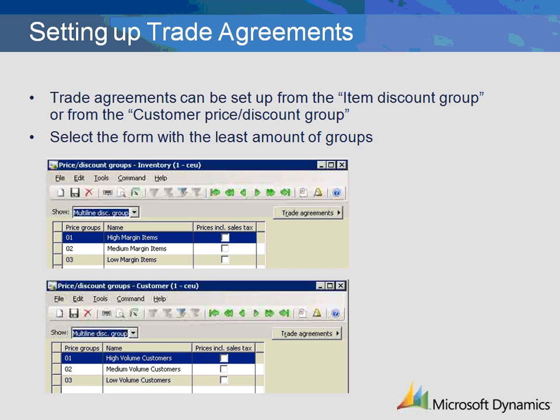Now that we have set up customer and item groups, we are ready to set up the trade agreement. The trade agreement is where the prices and discounts are defined. Notice that the item discount group and customer price discount group both have a button for trade agreement. A trade agreement can be set up in either form — when it is set up in one, it will automatically update the other. Generally, it is easier to use the form with the least amount of groups. In our example, we have the same amount of customer groups as item groups, so we will use the customer group.